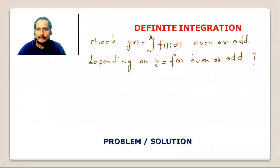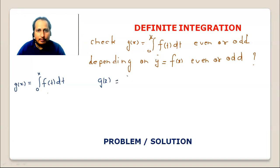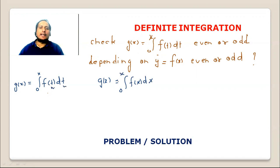Check g(x) — is it even or odd depending on y = f(x) being even or odd? Focus here: if I have g(x) written as the integral from 0 to x of f(t) dt, then g(x) is a function of x due to the x in the limits only. To determine even or odd, I calculate g(-x), but this variable t is replaceable.